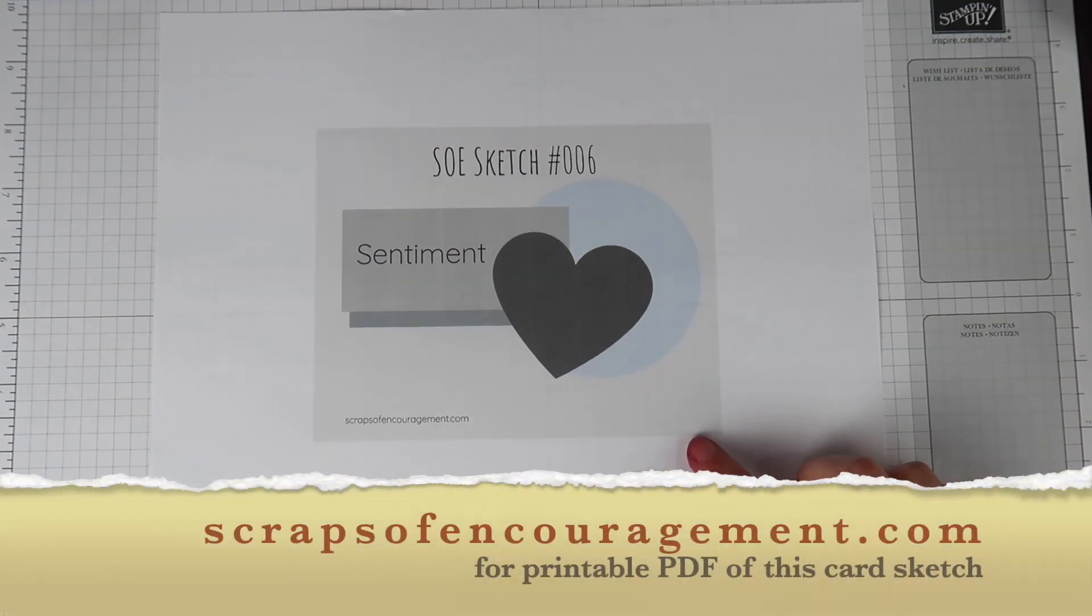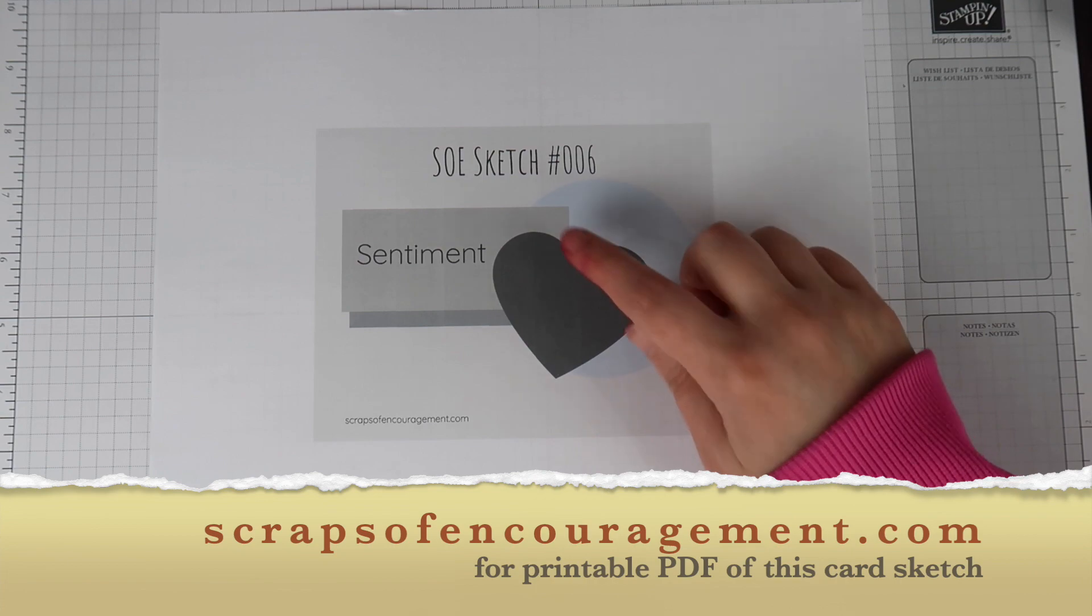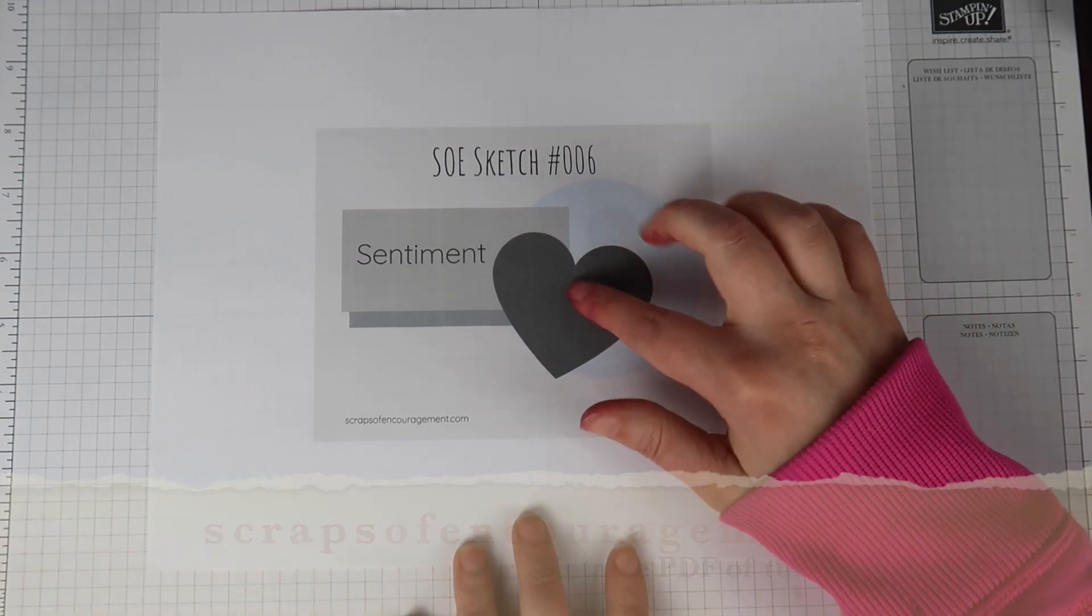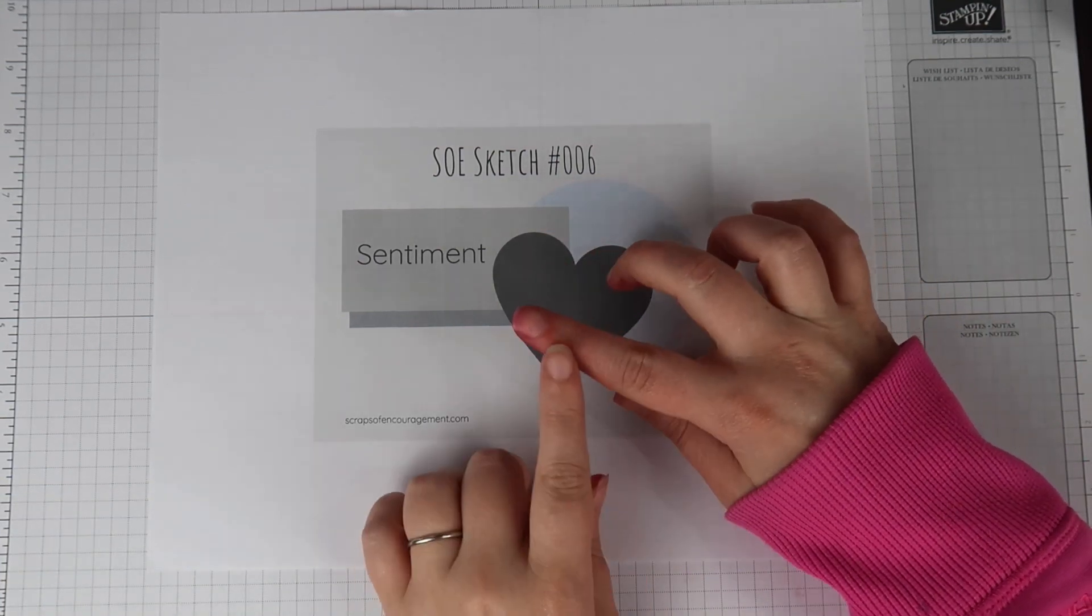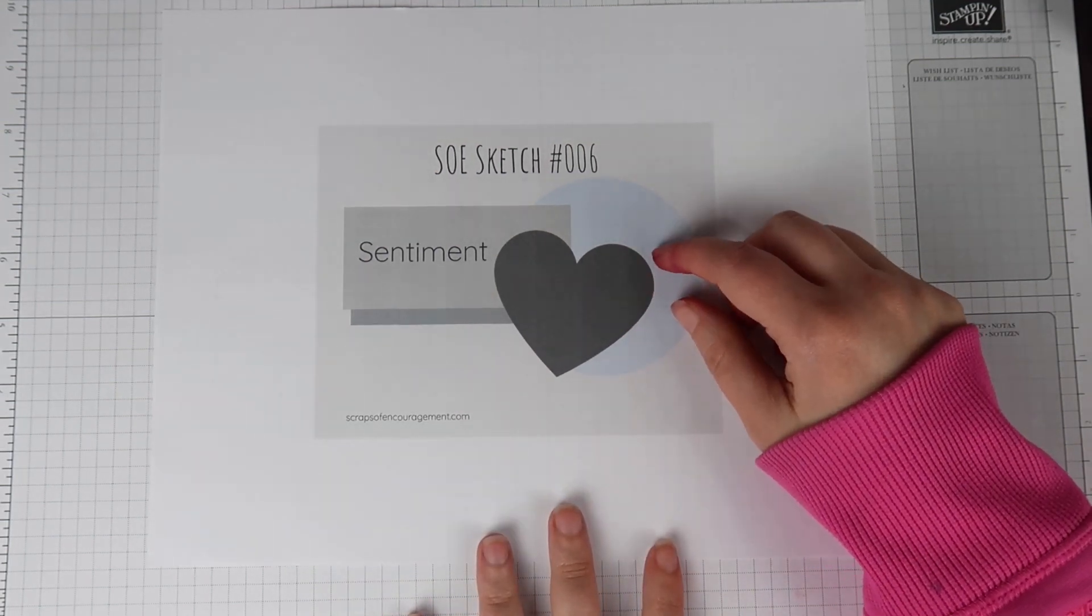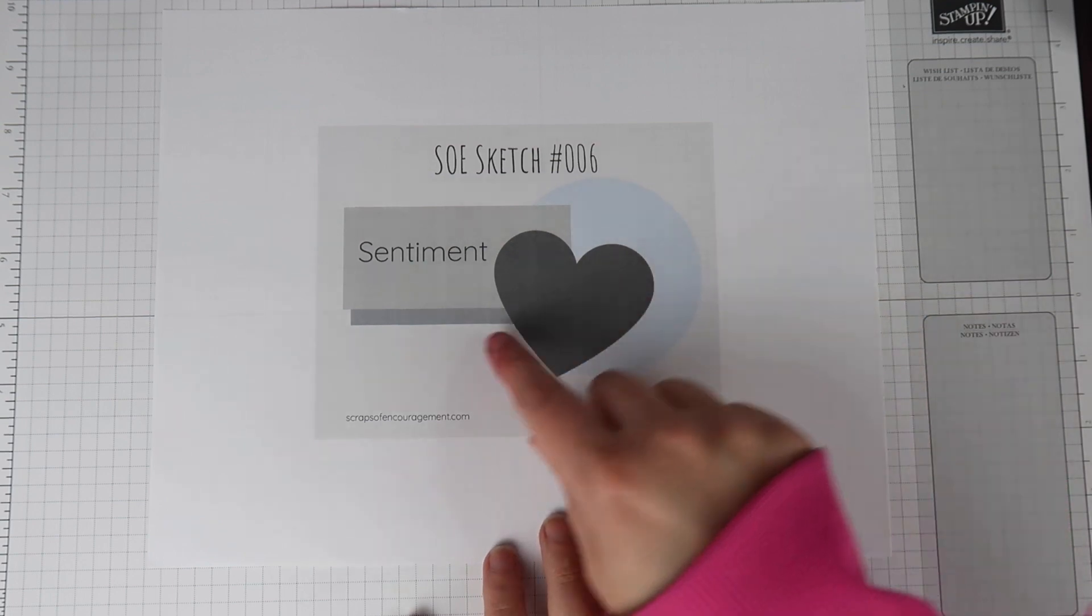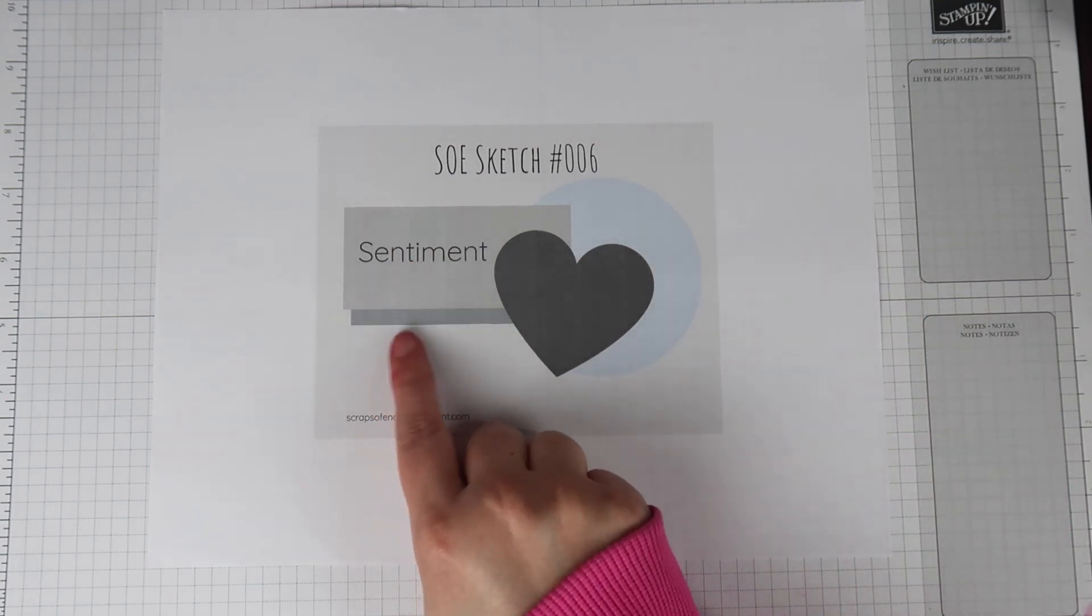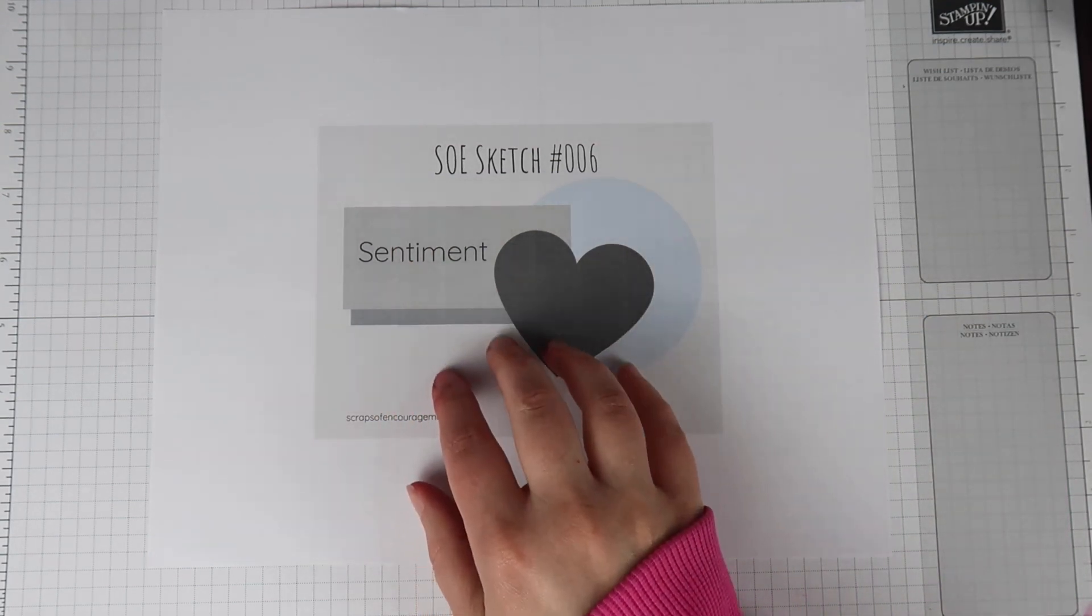And this sketch has a circle in the background to highlight your focal point. This has a circle, you can do a square, you can do whatever, and then I put a heart here to represent whatever focal point you have. I'll show you a few different ones and then we also have our sentiment that is a little bit offset.